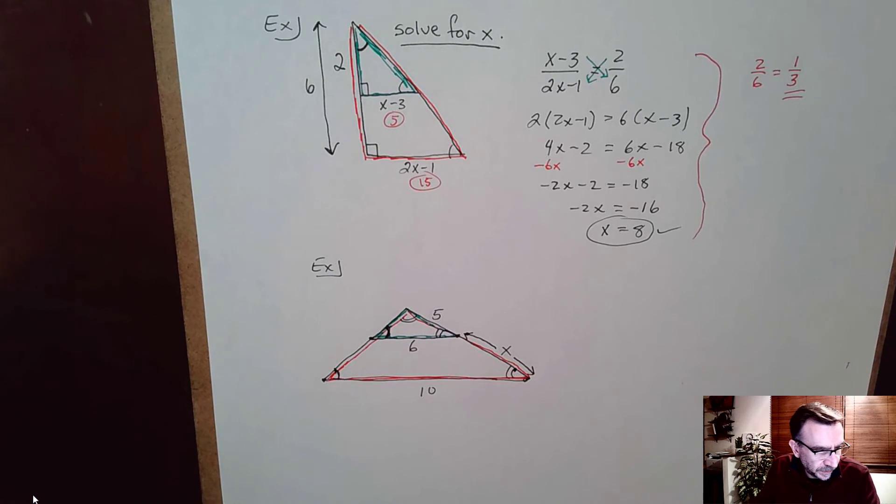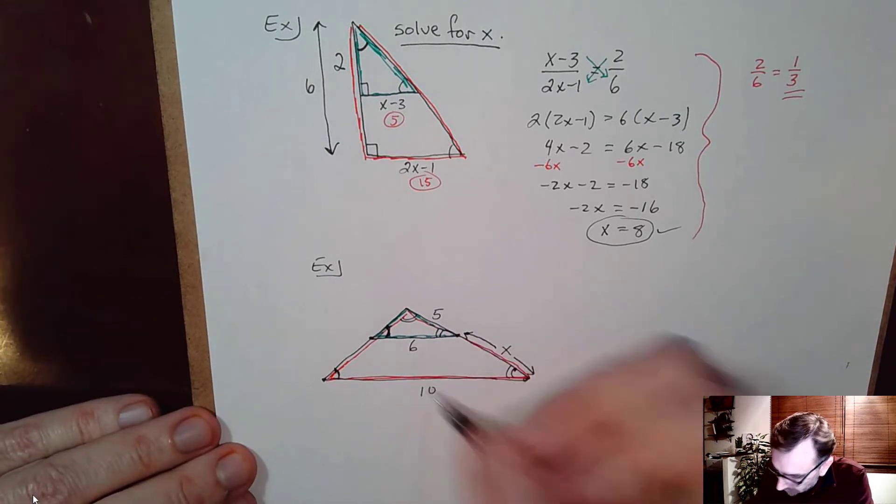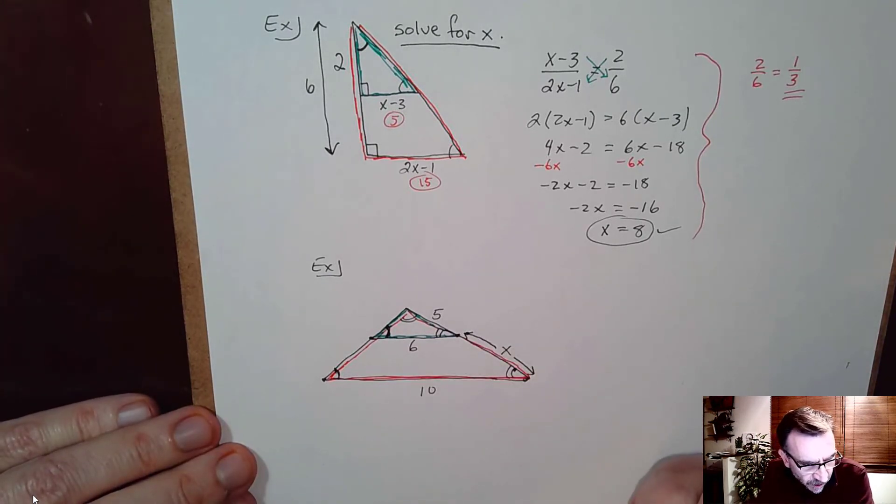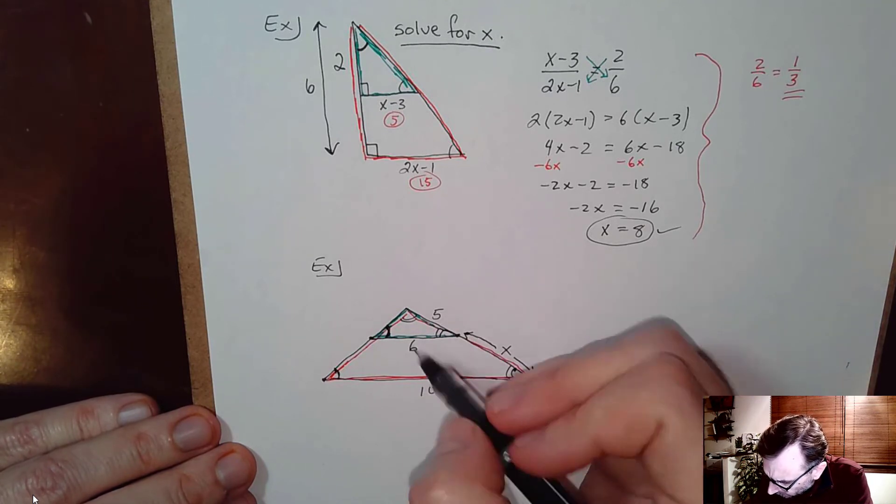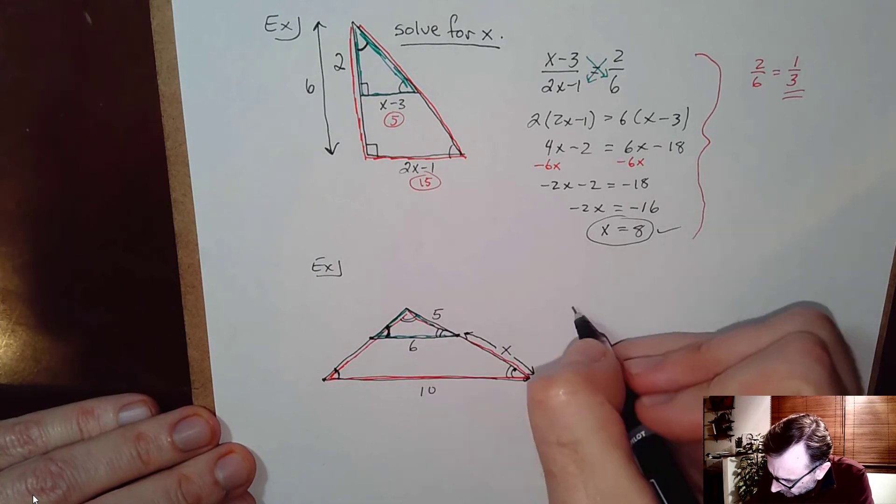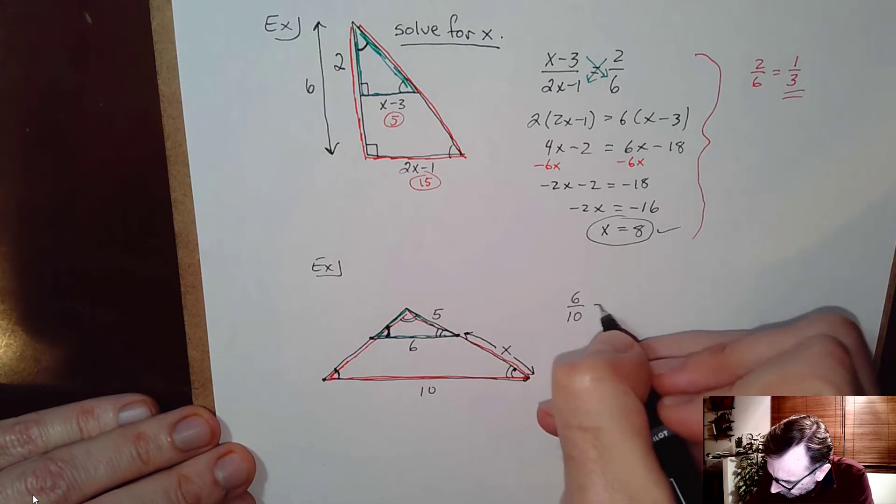And so we can set up some proportions here. In this case I'll do it a little differently. It doesn't really matter how you set up your proportions as long as you're consistent. Well I'll do base to base. So I'll do 6 is to 10 as.